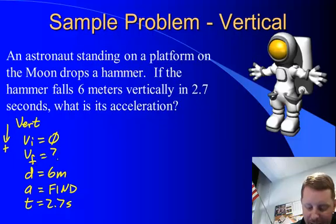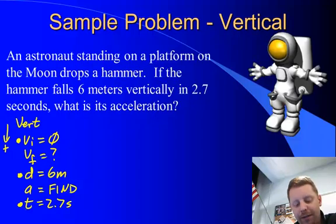It doesn't tell us anything about final velocity. So we know three things in this problem again. We know VI, we know D, and we know T. We're looking for A. So we need to find an equation that has most of those things in there.